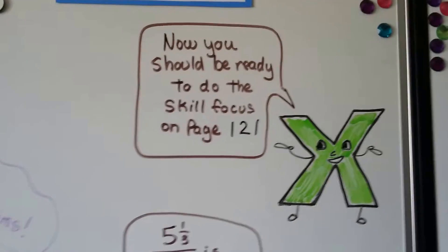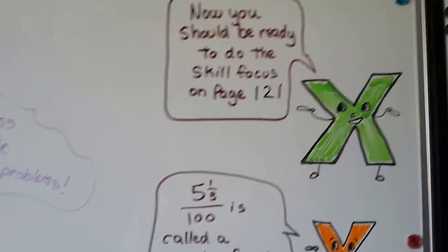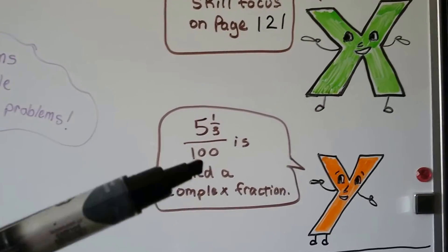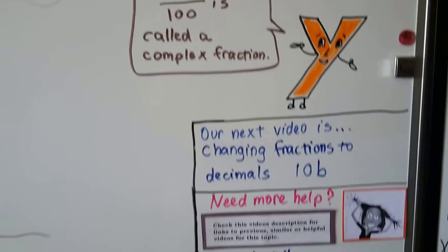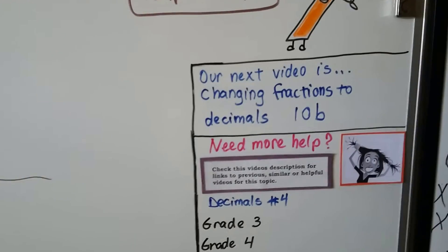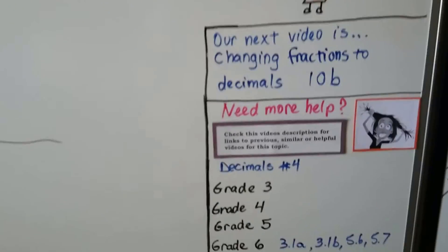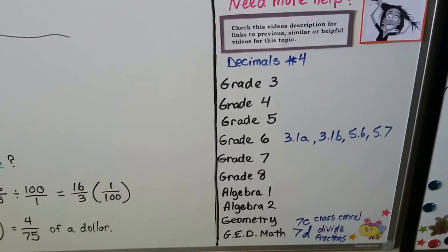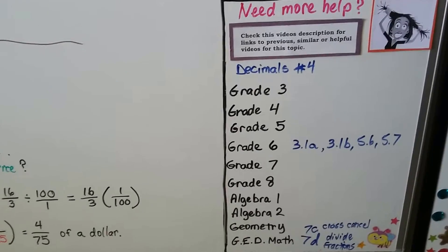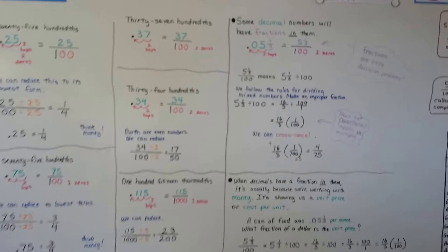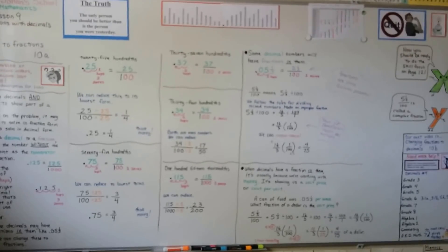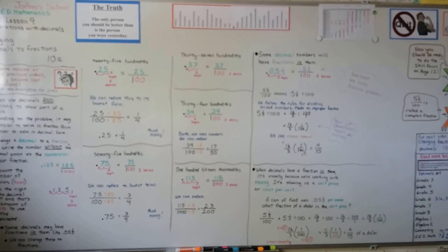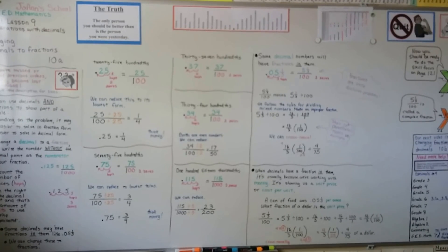You should now be ready to do the skill focus on page 121. Remember that you can have a fraction as a numerator — you can even have a fraction as a denominator or both; they're called complex fractions, and we'll get into those more as we approach algebra. Our next video, we're going to change fractions to decimals — the opposite of what we just did. Check the description for links to all previous videos, including cross-canceling and dividing fractions. I hope this helps, I hope you do well, and I'll see you next video.